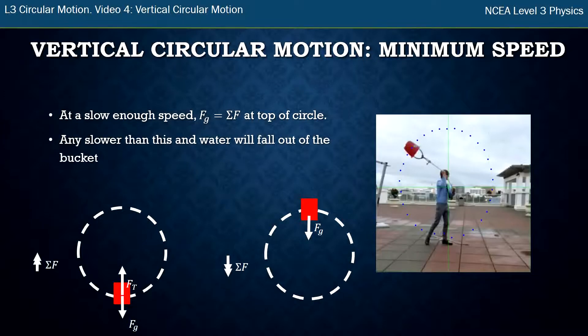And interestingly if we tried to go slower than this the water would fall out of the bucket. So we call this speed the minimum speed. This is the minimum speed when the gravity force at the top provides all the force it needs to go around the circle.